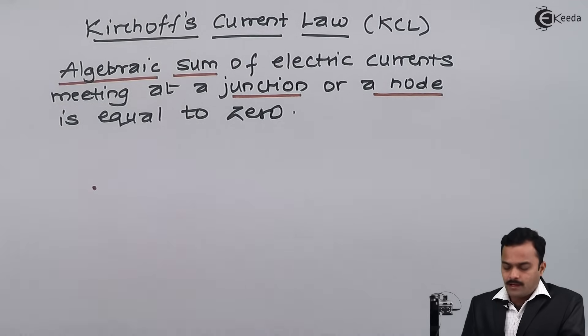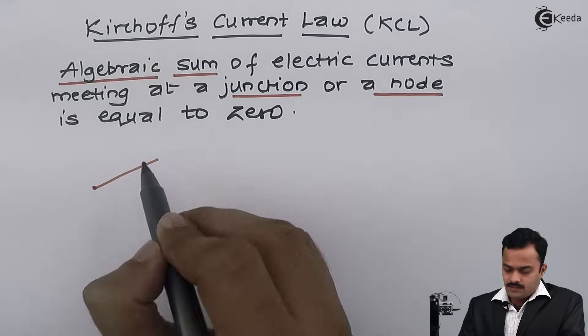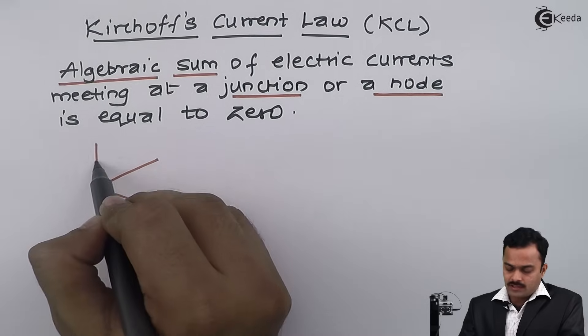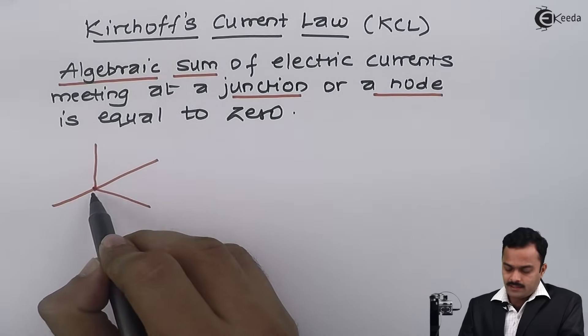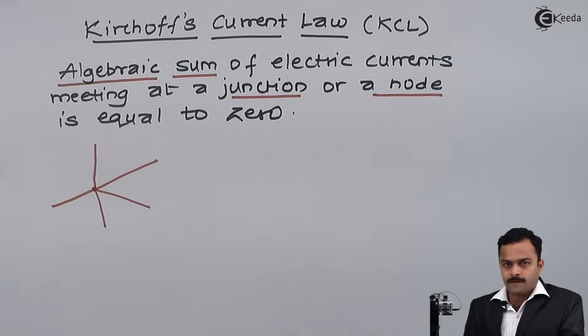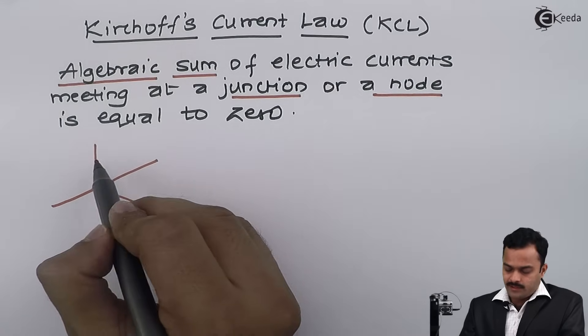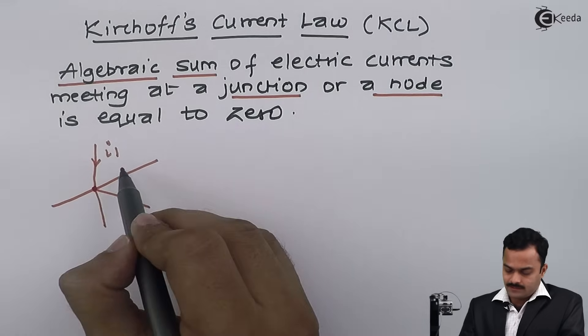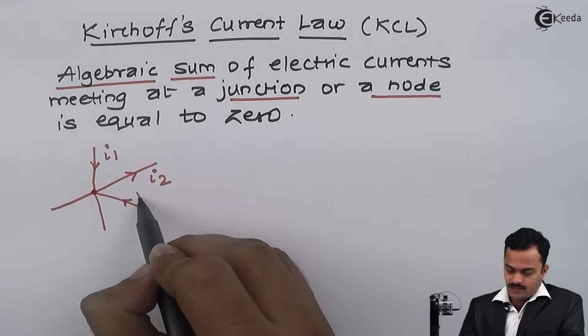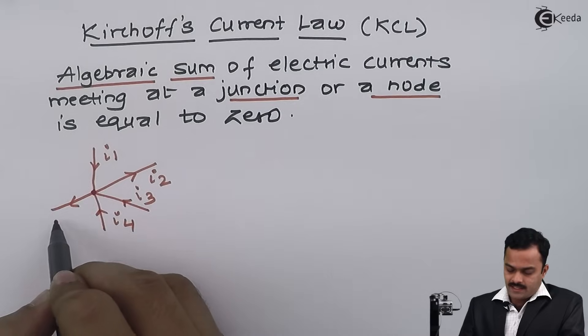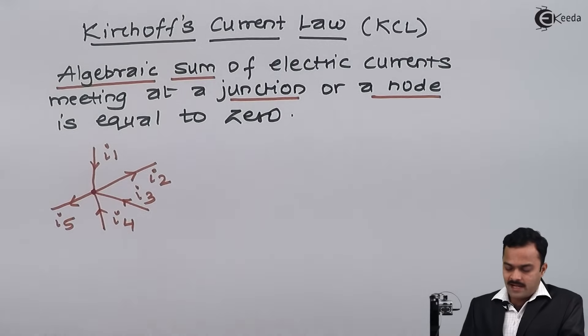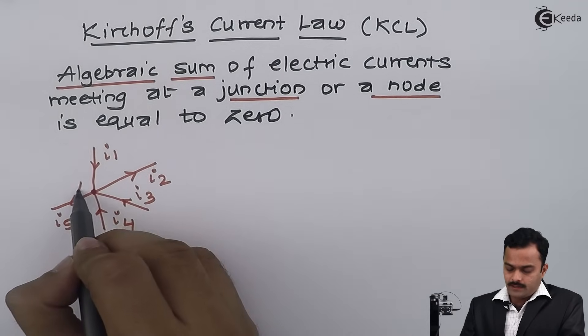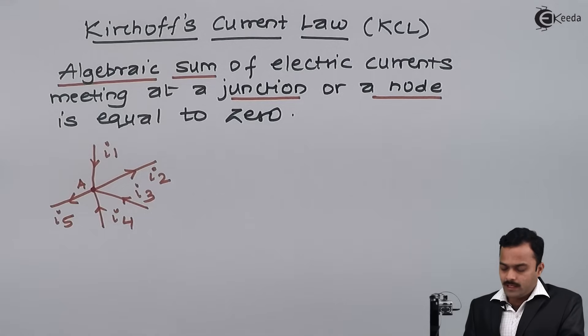To elaborate, let's consider a simple circuit. I'm considering this point as a node or junction where some branches are connected. For these branches, I will assign random current values in random directions. I consider five branches meeting at point A with currents i1, i2, i3, i4, and i5.